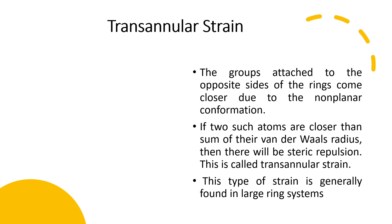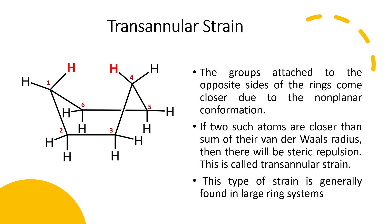The next type of strain is transannular strain. This is a special type of steric strain generally found in large ring systems. In such compounds, groups attached to opposite sides of the ring come closer due to their non-planar conformation. In the boat conformation of cyclohexane shown here, the hydrogen atom on carbon number one and the hydrogen atom on carbon number four are close to each other. If this distance is closer than the sum of their van der Waals radii, there will be steric repulsion. So this boat conformation experiences transannular strain.